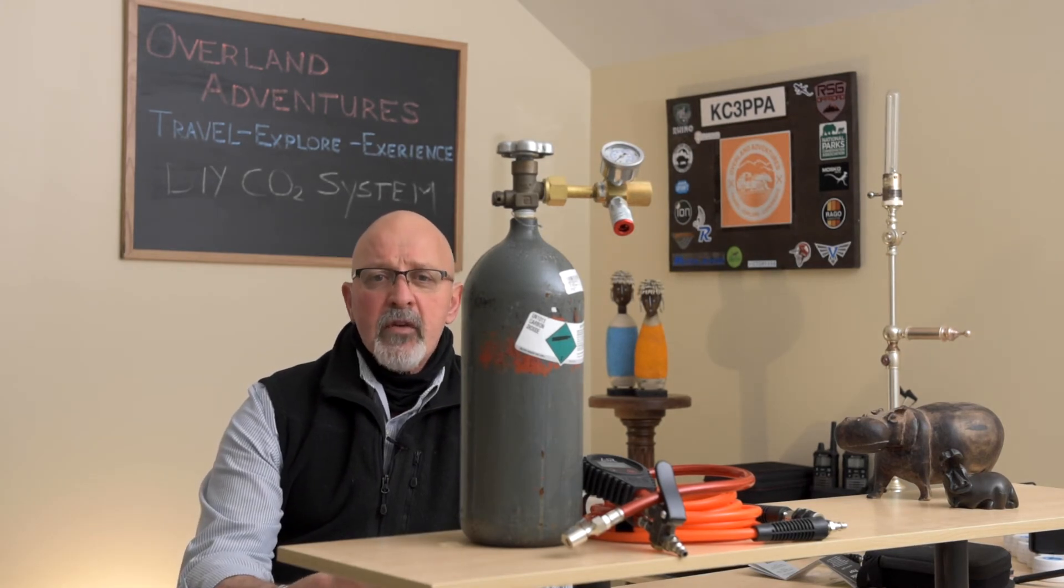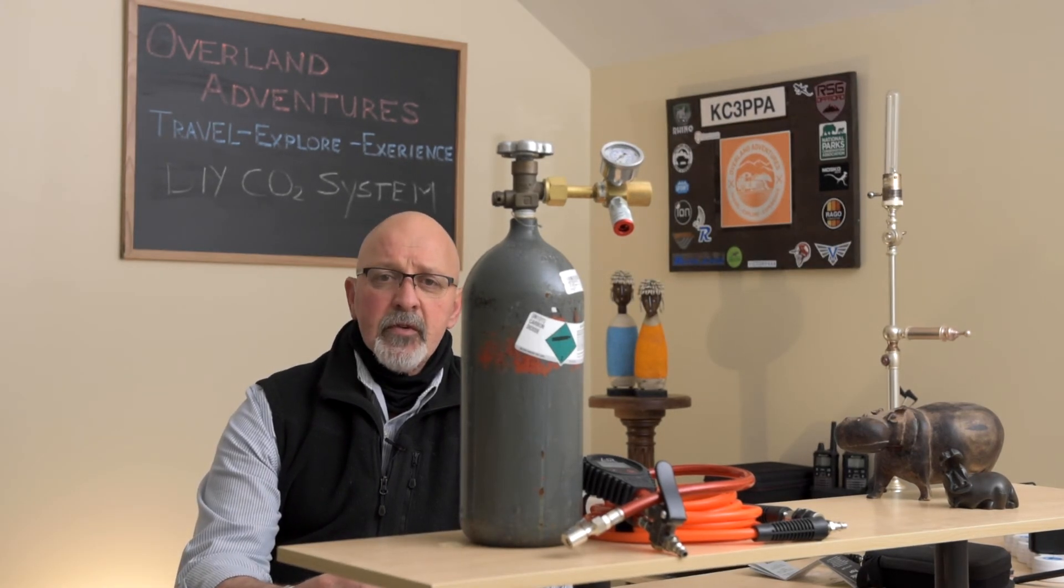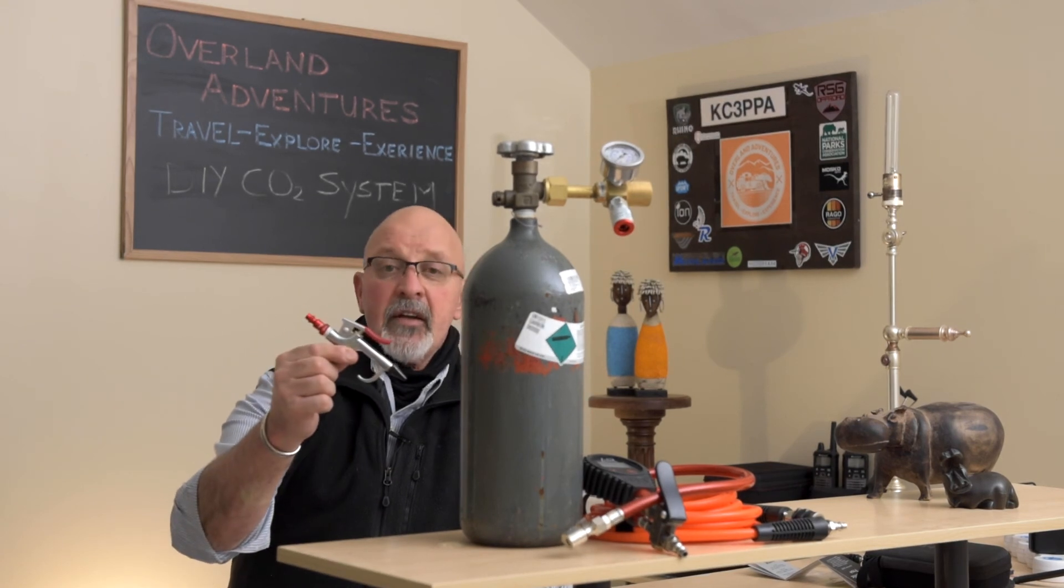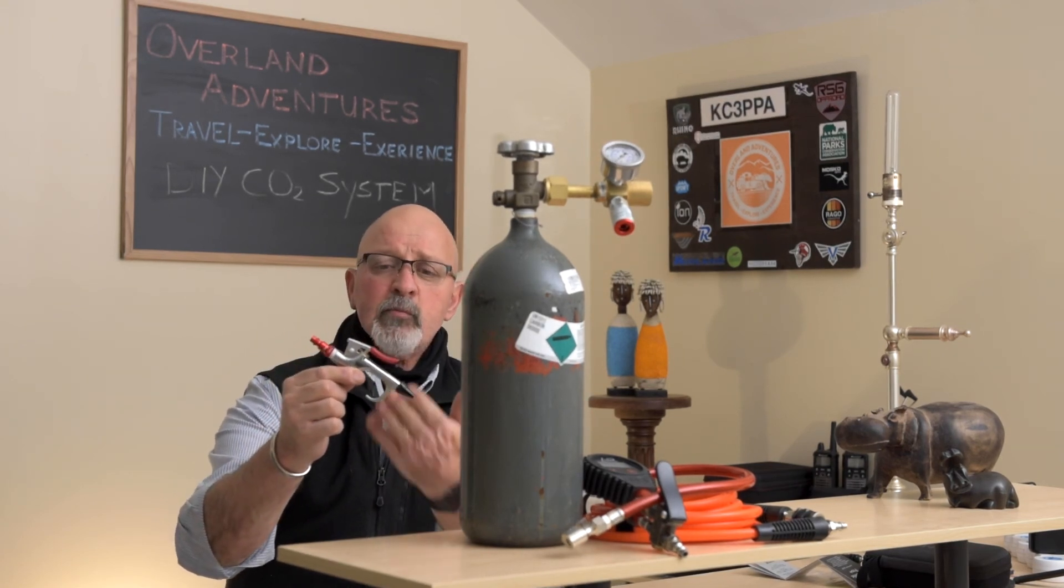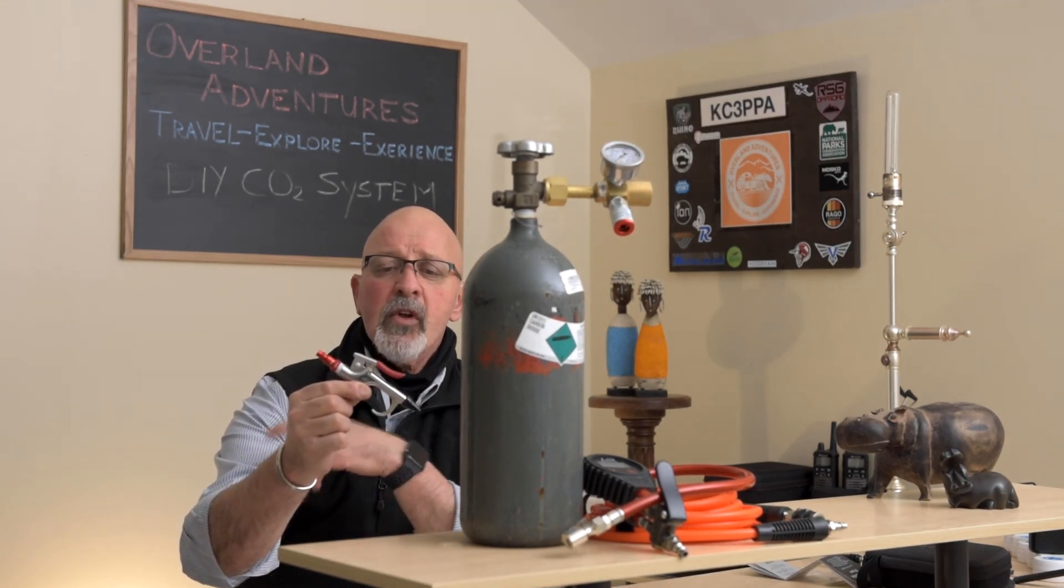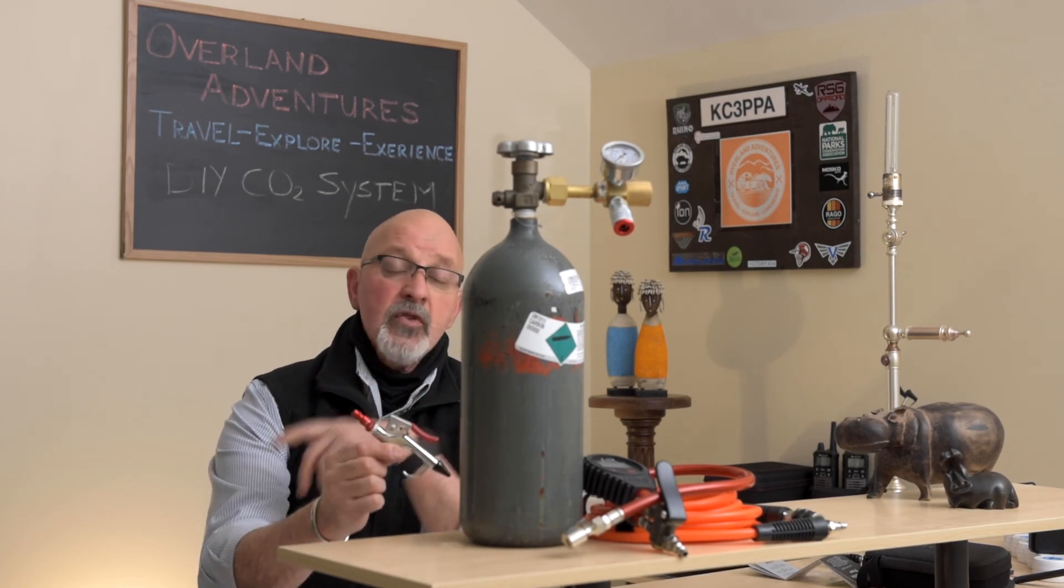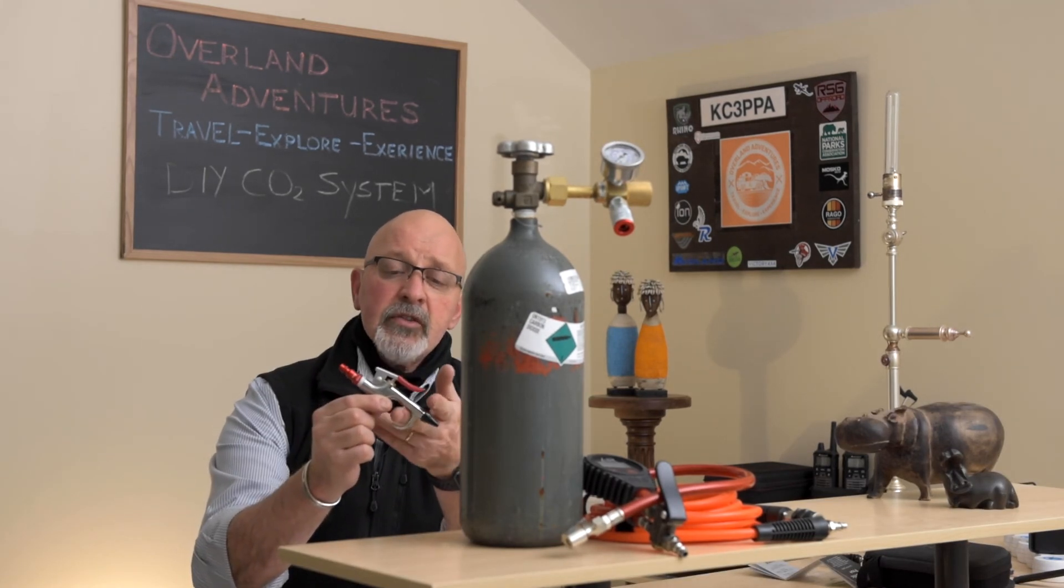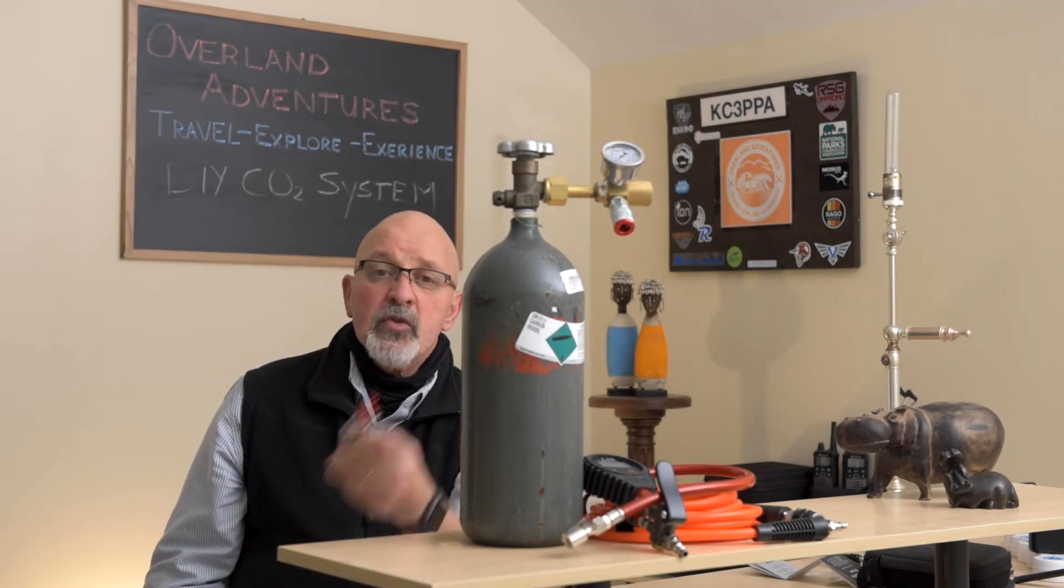I also mentioned at the beginning of the video that I had a bonus item for you. This is an air gun connection. Pretty straightforward simple. You can connect it to your air hose and use it to clean out the car when you come off the trail and it's a small item keep it in your toolbox.